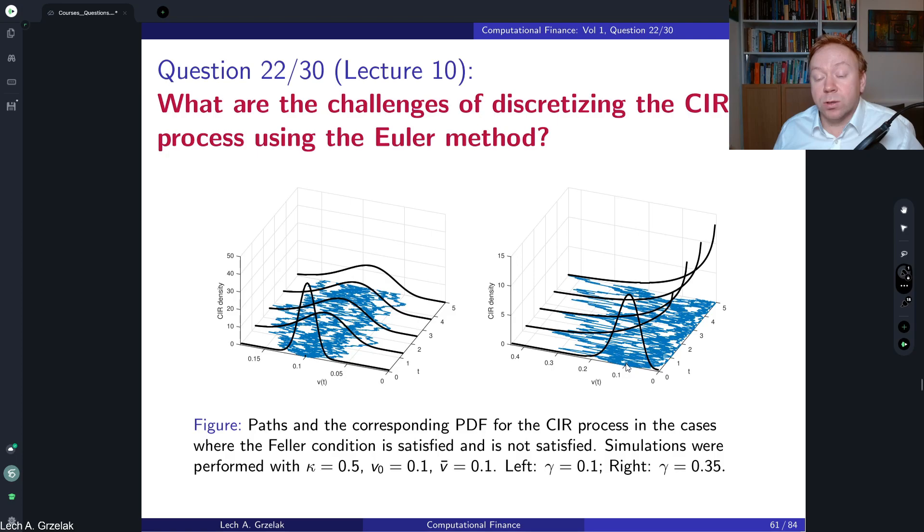In the case of the Feller condition not satisfied, we see something much more extreme. We see that the volatilities initially have a very similar distribution as for the Feller condition satisfied. However, as we go in time, as the simulation of the paths takes place, then some of the paths go close to zero and some of them they are becoming very extreme.